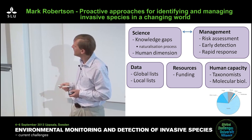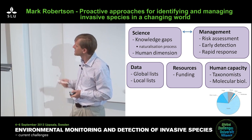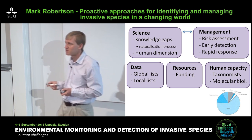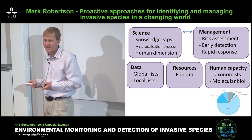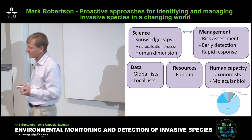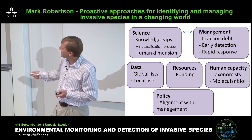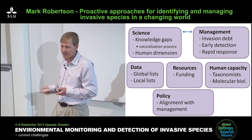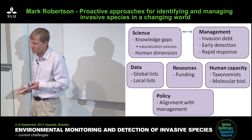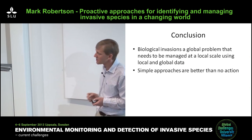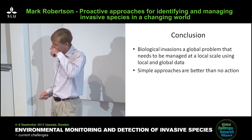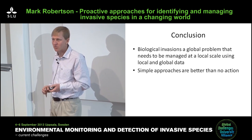Funding is a big issue — the example of the Global Invasive Species Program losing funding is a real priority concern. In terms of human capacity, we really need to invest in taxonomy, taxonomists, and molecular biologists, because many small organisms can't be identified without those techniques. In terms of policy, we need alignment with management — an interaction between science, management, and policy. To conclude: biological invasions is a global problem that needs to be managed at a local scale using both local and global data. Simple approaches are often better than no action at all, and often we need simple approaches in many parts of the world.